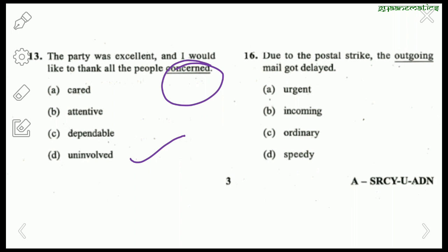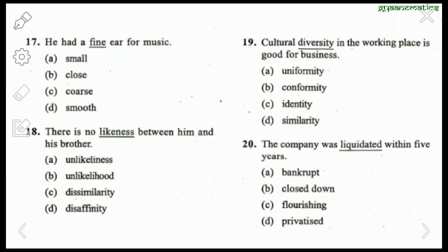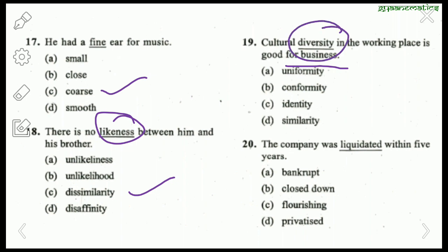Next: 'Due to the postal strike the outgoing mail got delayed.' The antonym of outgoing is incoming. Next: 'He had a fine ear for music.' The opposite of fine is coarse. Next: 'There is no likeness between him and his brother.' Likeness means similarity, so the opposite is dissimilarity. Next: 'Cultural diversity in the workplace is good for business.' The antonym of diversity is uniformity.